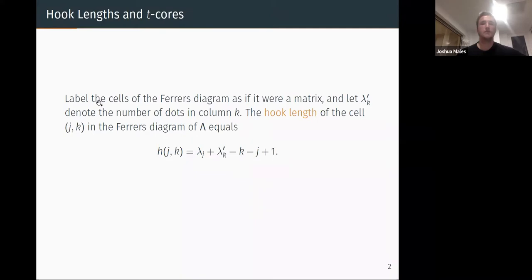For us, we want to look at hook lengths and t-cores. If we label the cells of our Ferrers diagram like a matrix, so the top left is 1,1, and then we denote by lambda k prime the number of dots in column k, the hook length of the cell j,k in the Ferrers diagram is just given by this formula. This looks a bit messy, but it's very natural when we come to look at it.